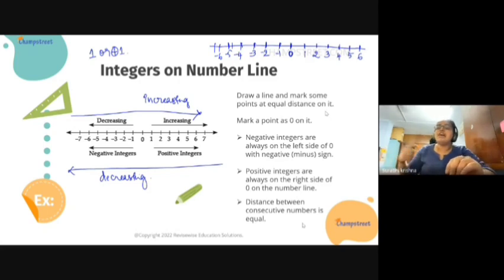The numbers that come one after the other in order. Say, for example, five, six, seven. After five, six should come. After six, seven should come, right? So these are three consecutive numbers.